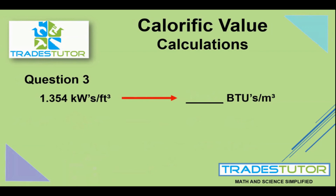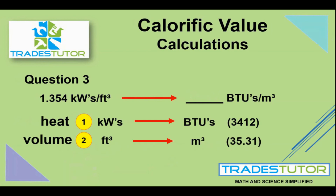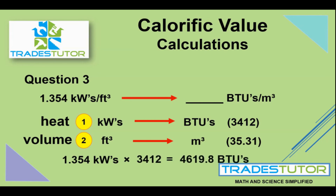Question three: kilowatts per cubic foot to BTUs per cubic meter. Same thing — two steps. Kilowatts to BTUs, then cubic feet to cubic meter. Once again, we're going up in volume. We take 1.354 kilowatts, multiply that by 3,412 to get that many BTUs per cubic foot. Then we multiply by 35.31 to convert to cubic meter, giving us 163,125 BTUs per cubic meter.